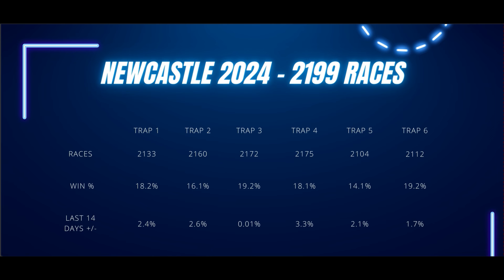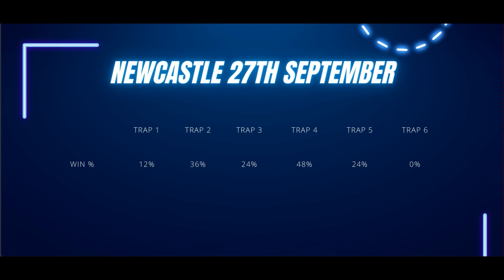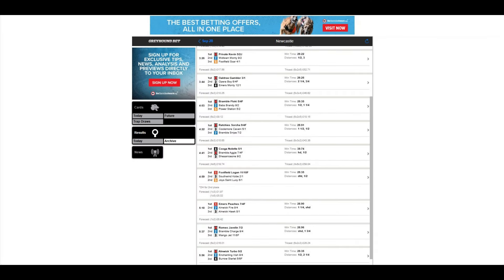What we want to look for is bigger swings. Looking at the win percentage for just the 27th of September at Newcastle: trap 1 won 12% of races, trap 2 won 36%, trap 3 won 24%, trap 4 won 48%, trap 5 won 24%, and trap 6 won 0%. Looking at the bigger swing — dog 6 didn't win at all. In order for the trap to get close to its average win percentage, we'd need to see some wins from dog 6. We look at the next day's results and dog 6 won 6 races that day.